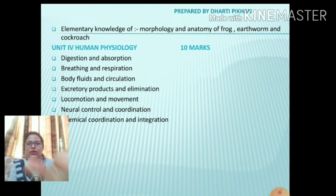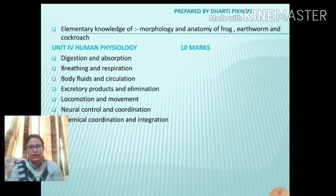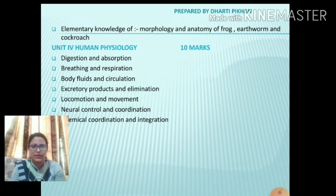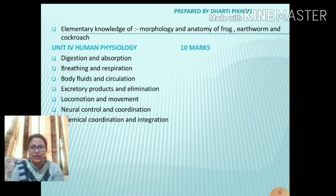Then we have the fourth unit, that is human physiology. This is the lengthiest chapter but also the most important one — it has so much knowledge and content that if you study it in full detail, many things will become clear on their own. It carries 10 marks. It includes: digestion and absorption, breathing and respiration, body fluids and circulation (all blood-related), excretory products and elimination, locomotion and movement (joints, backbone, etc.), neural control and coordination (brain-related), and chemical coordination and integration.